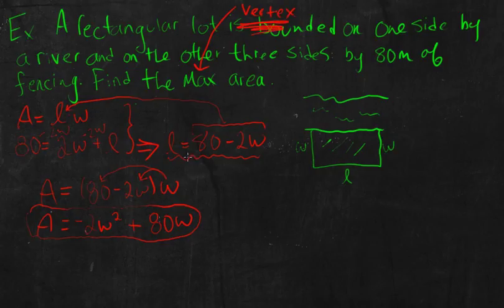So I show my students a really neat way to be able to find the vertex that doesn't require completing the square. It's called the axis of symmetry. And the axis of symmetry is basically X, but in our case, our X is W, because that's what we have in terms of our variables. X is equal to negative B over 2A.